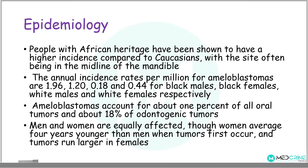In terms of epidemiology, people with African heritage have a higher incidence compared to Caucasians. The annual incidence rates per million people are: 1.96 for Black males, 1.20 for Black females, 0.18 for white males, and 0.44 for white females. Ameloblastomas account for about 1% of all oral tumors and about 18% of odontogenic tumors. Men and women are equally affected overall, though women tend to be on average four years younger than men when tumors first occur, and tumors tend to run larger in females.